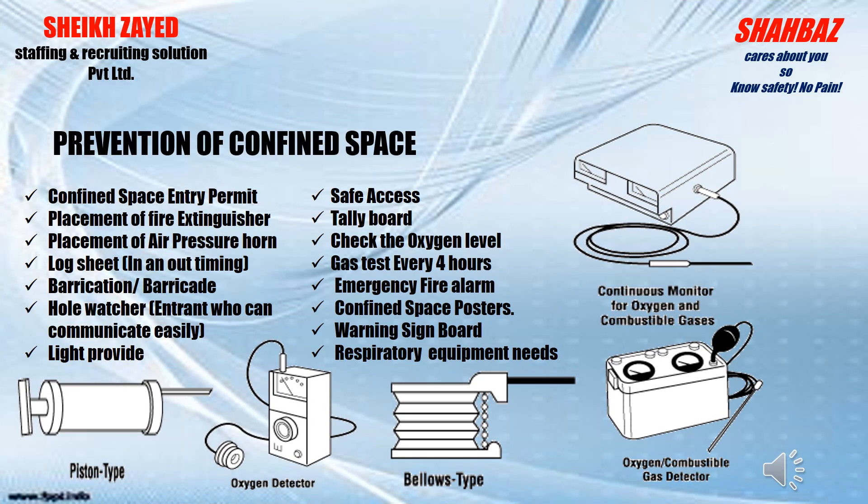Now that you know the hazards, what are the control measures for confined space? These include: prevention of confined space entry, a permit-to-work system, placement of fire extinguishers, air pressure or oxygen control, lockout/tagout, barricades, atmospheric sensors, hole watchers, an attendant who can communicate easily, lighting, safe access, a tally board, oxygen level checks and gas tests every 4 hours or every 1 hour, emergency rescue plans, confined space signage, warnings, and respiratory protective equipment.